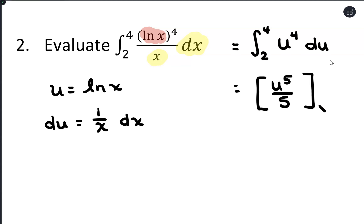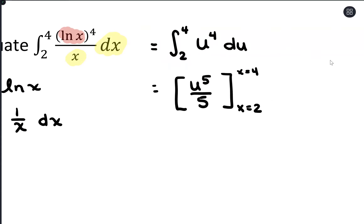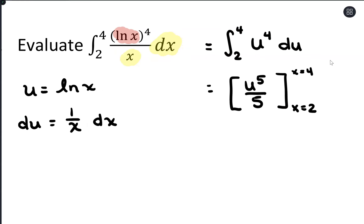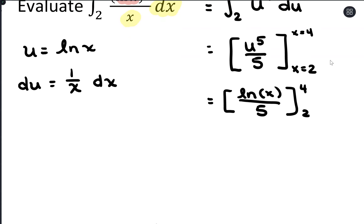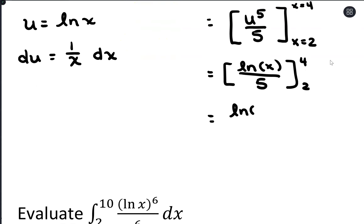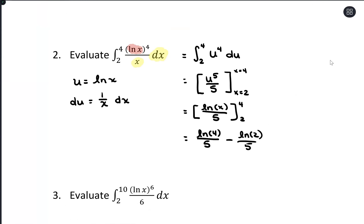No plus c since this is a definite integral, evaluating from x equals 2 to x equals 4. Before we can substitute those, we need to replace u. So this is going to be evaluating (natural log of x) to the 5th divided by 5, from 2 to 4 — that gives us (natural log of 4)^5 over 5 minus (natural log of 2)^5 over 5. We could leave it like that or get a decimal approximation, but that gets us to our answer.